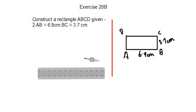So this one is, we have got over here two dimensions again, and we have to make the rectangle. AB is 6.9 centimeters and BC is 3.7 centimeters.